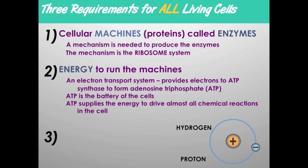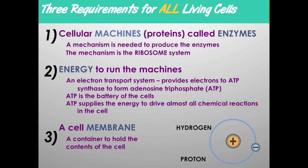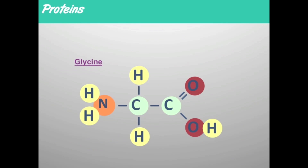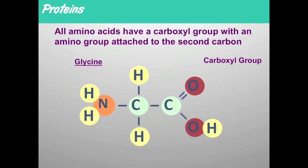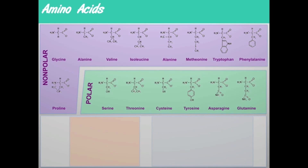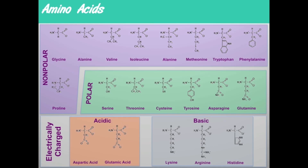A third structure required by all cells is the cell membrane — the container that contains the components of the cells. Proteins, or enzymes, are long chains made up of 20 different amino acids. Amino acids have a general structure: they have a carboxyl group and an amino group. The simplest amino acid is glycine. Other chemical groups attach at that position to form the other 19 different amino acids. We have polar, nonpolar, electrically charged, basic, and acidic amino acids — the different groups attached at that second carbon give you the 20 different kinds.